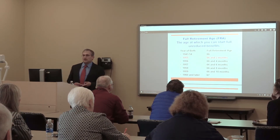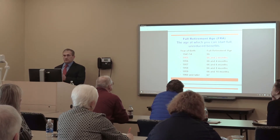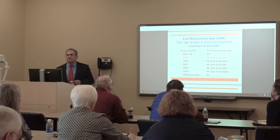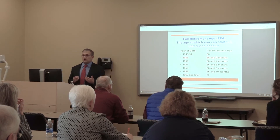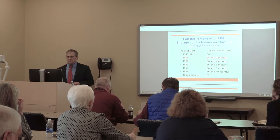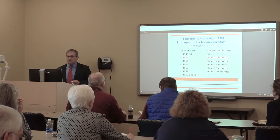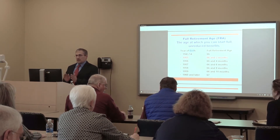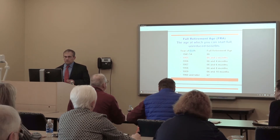The first acronym we'll use throughout the presentation is FRA, which stands for full retirement age. This is when you can start receiving what Social Security calls full benefits. The year of birth is in the left column, and the full retirement age that applies is in the right column.